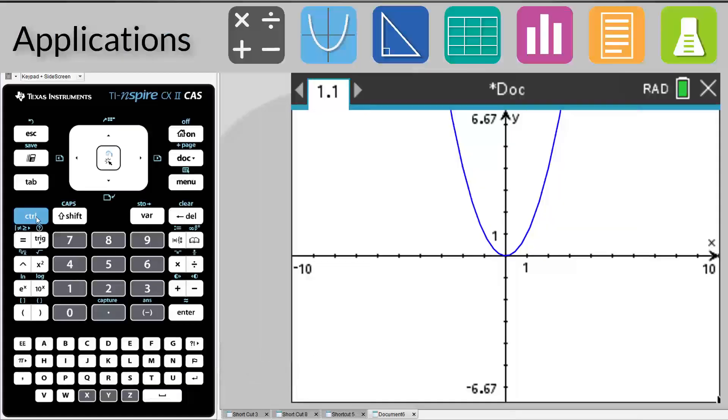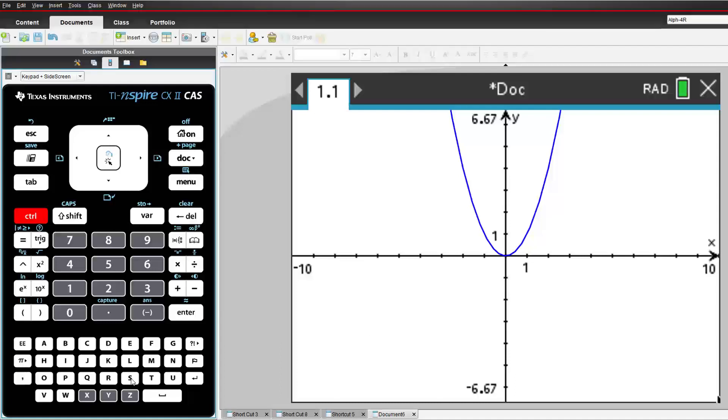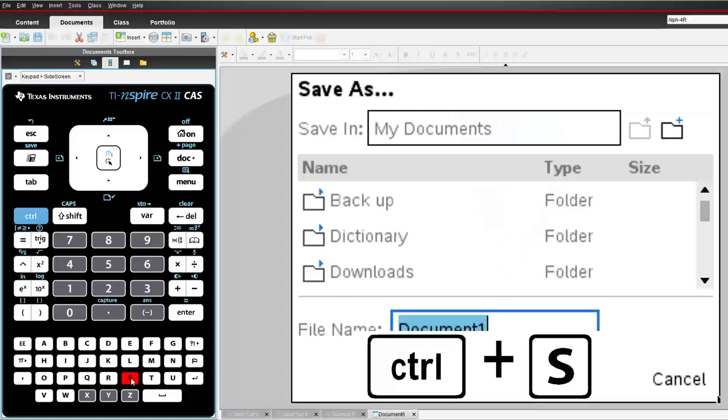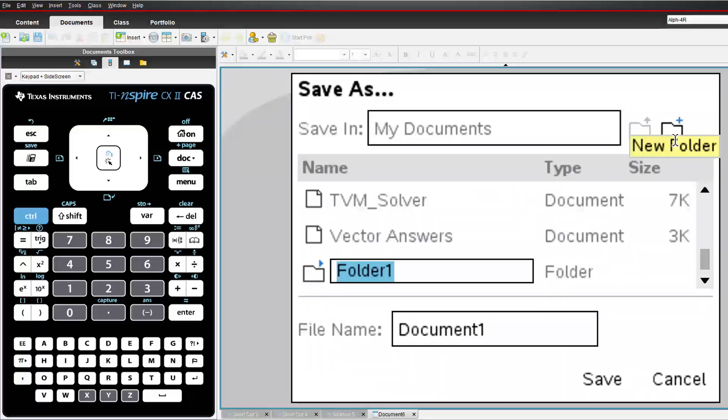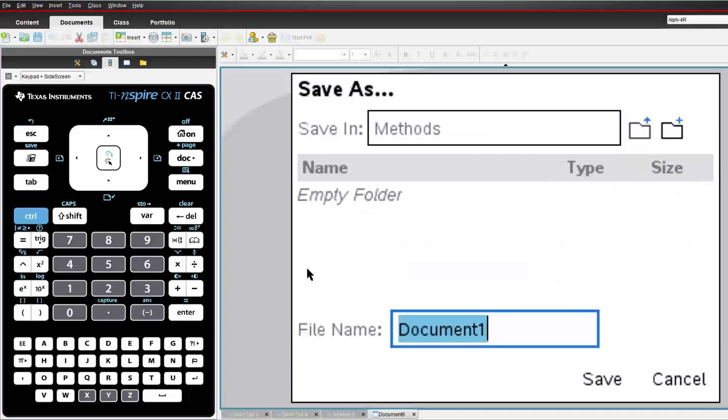One of the really powerful features of TI-Inspire is that you can save your work in a document. The most obvious way to save is to press CTRL and S. If you haven't saved your document previously, you'll be prompted for a name and folder location.